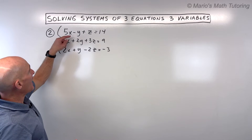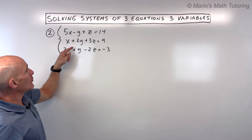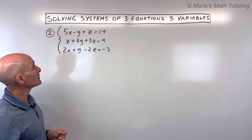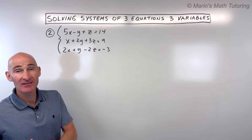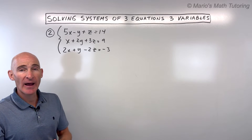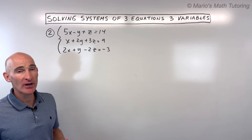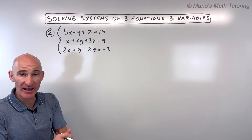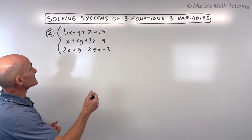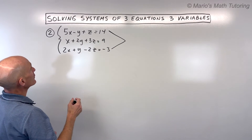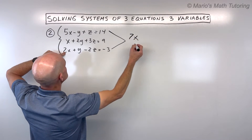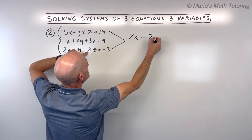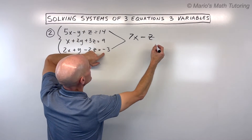Here I think it might be easier to work with the y's. I'm going to add the first and third equations together, because the negative one y and the positive one y will cancel when I add them. You might ask: can we subtract equations or do we always have to add them? You can subtract, but I find adding a little bit easier — if needed, multiply an equation by negative one so you can then add and cancel. Adding the first and third: 5x plus 2x gives 7x, the y's cancel, 1z plus negative 2z gives negative z, and 14 plus negative 3 equals 11. So we get 7x minus z equals 11.